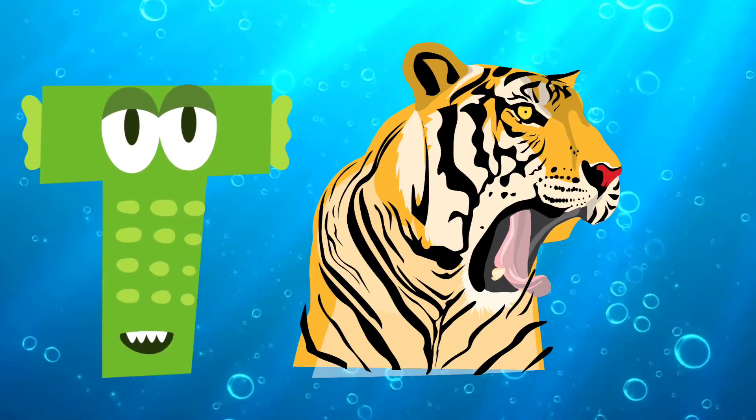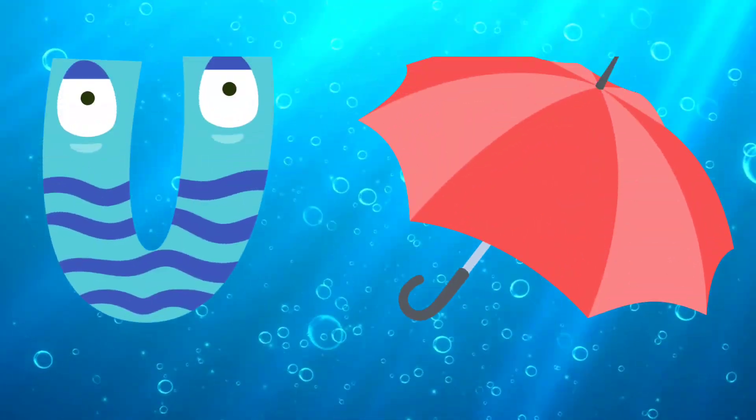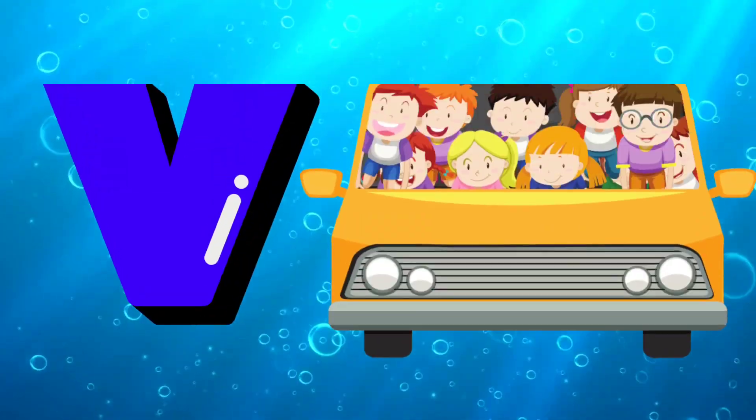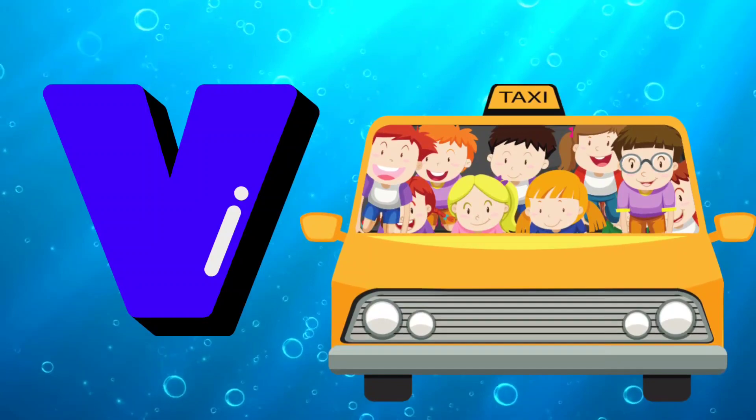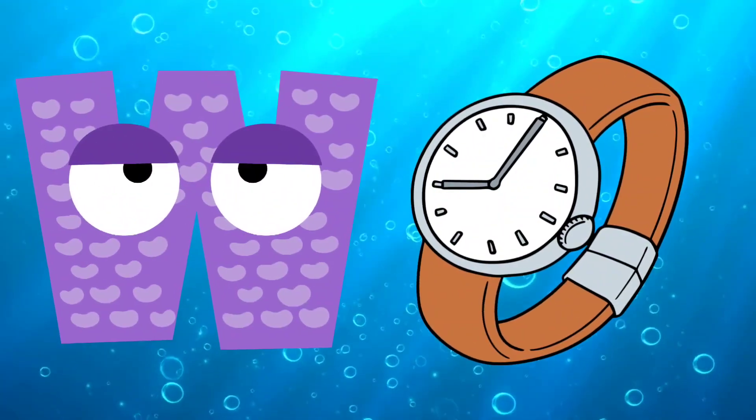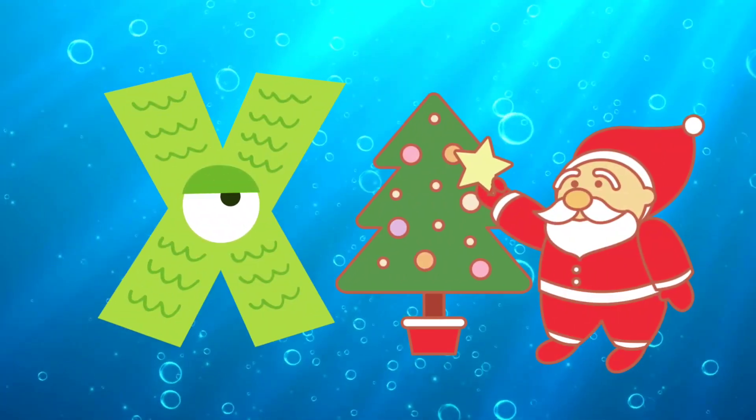T is for Tiger, U is for Umbrella, V is for Van, W is for Watch.